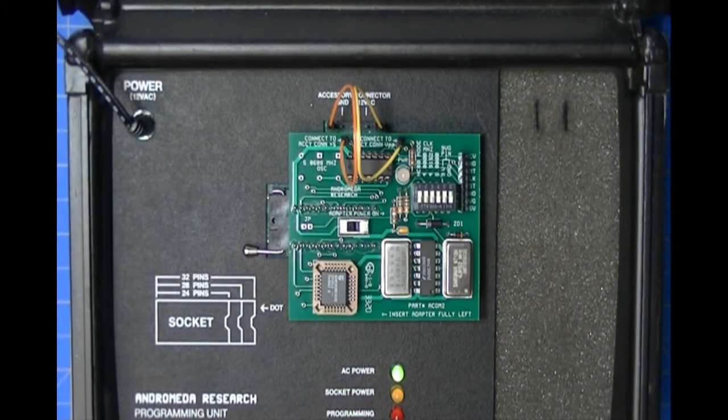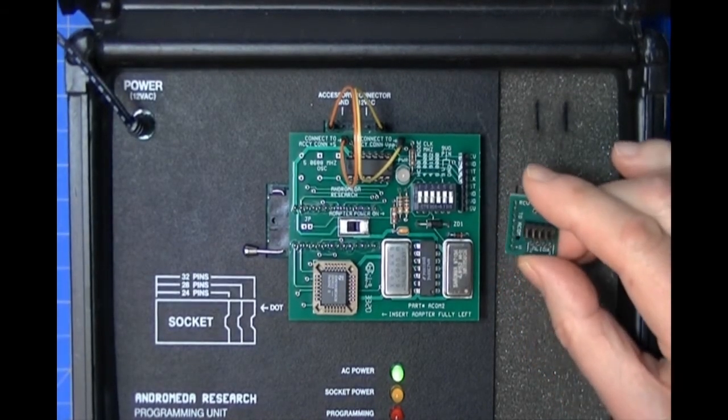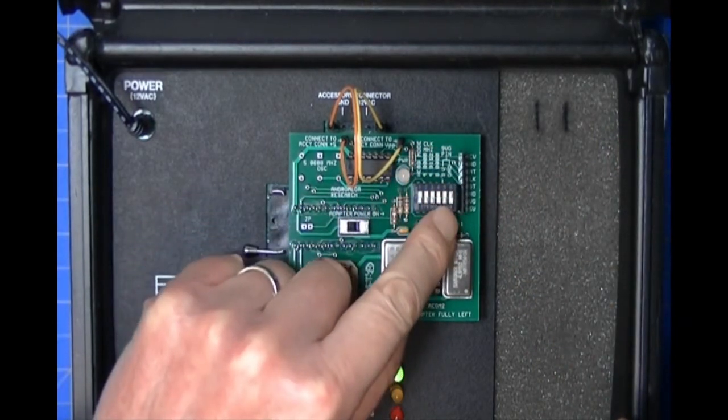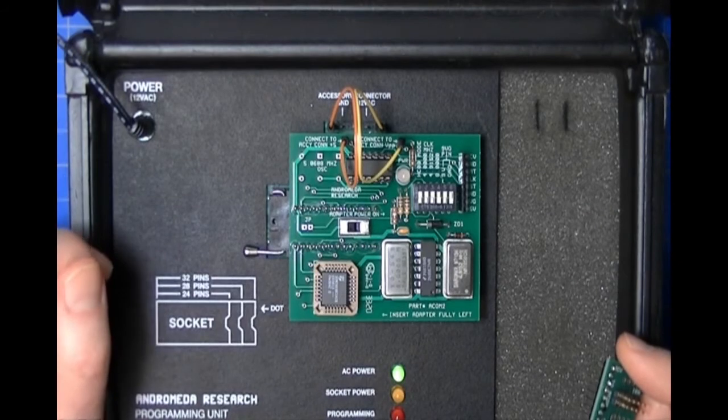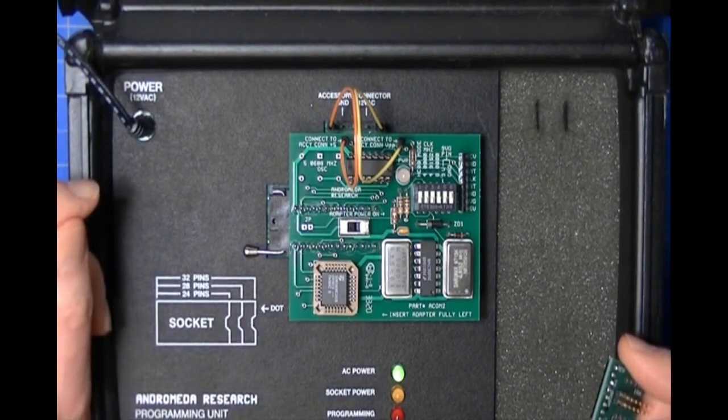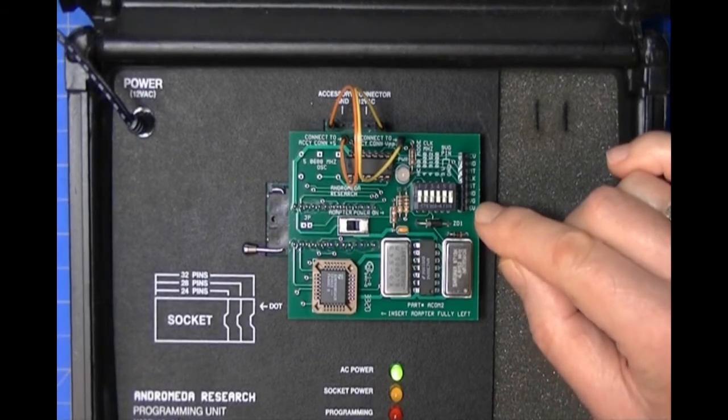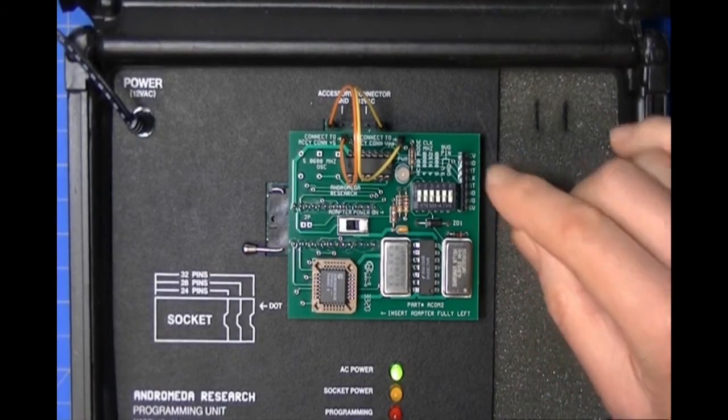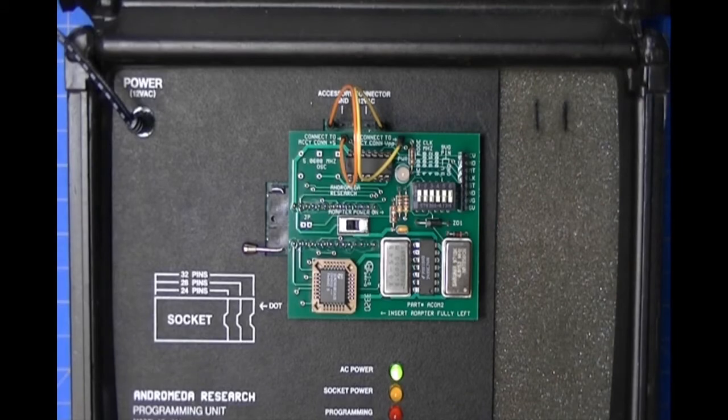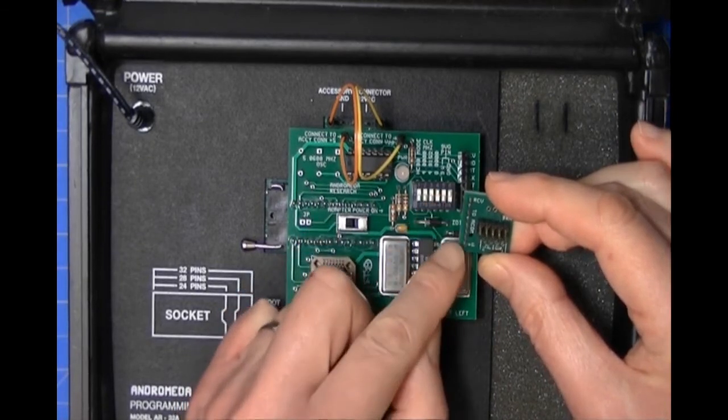The next thing we have to do is install the transition board, which is right here. The transition board aligns with the strip connector on the ACOM 2. The pins on the strip connector are labeled plus five going up to the top, plus five, VG ground, up through transmit and receive.